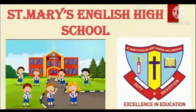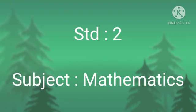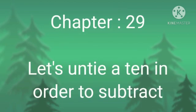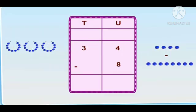Hello dear students, welcome back. Standard 2, Subject Mathematics, Chapter 29: Let's Untie a Ten in Order to Subtract. Students, today we are going to learn Let's Untie a Ten in Order to Subtract. We'll start with 34 minus 8.